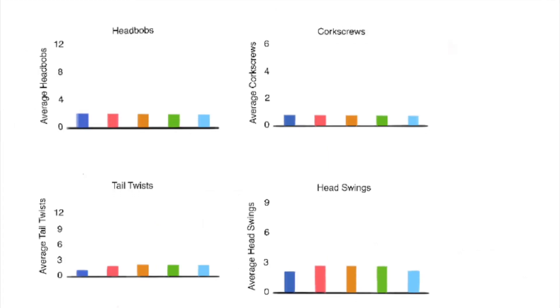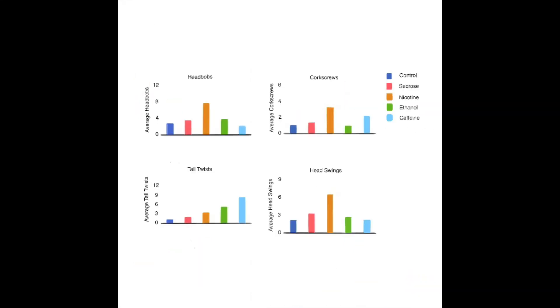While C-shapes were our main measure, we also assessed four other types of behaviors. Values of head bobs and corkscrews were significantly higher for the nicotine solutions. Values for tail twists, however, were significantly lower for solutions of ethanol and caffeine. Head swing data was shown to be insignificant.